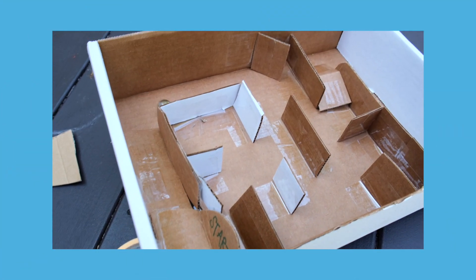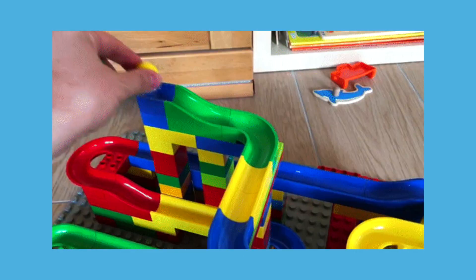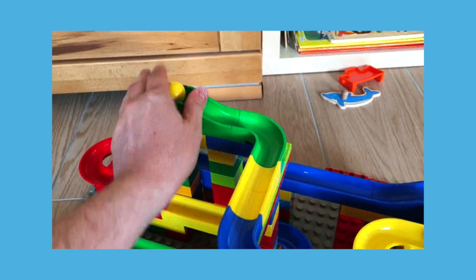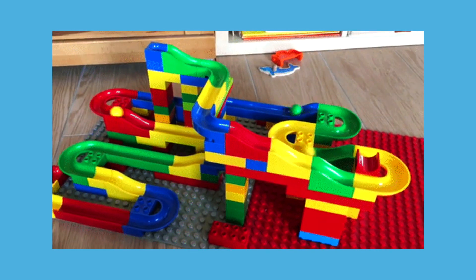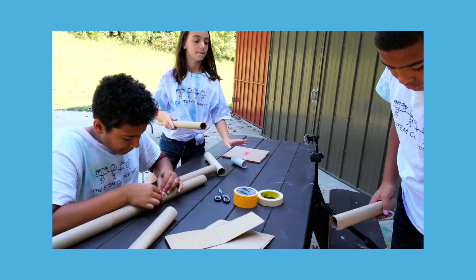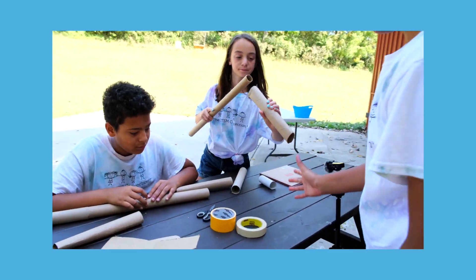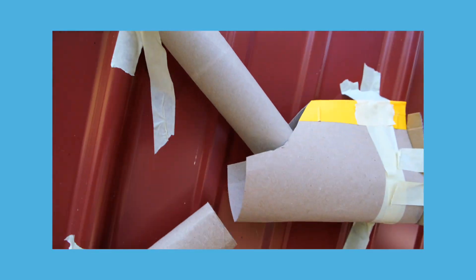Today we're gonna be making a ball run. A ball run is a ramp or a course that uses the force of gravity to help a ball get from the top of the run to the bottom. Today we're gonna be innovators and use objects that we can find around the house to make a ball run of our own. Let's get back to the STEM kids and get creating.